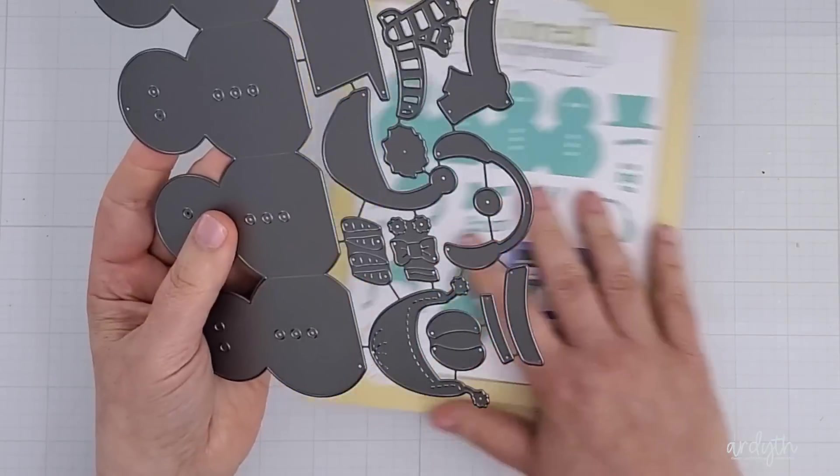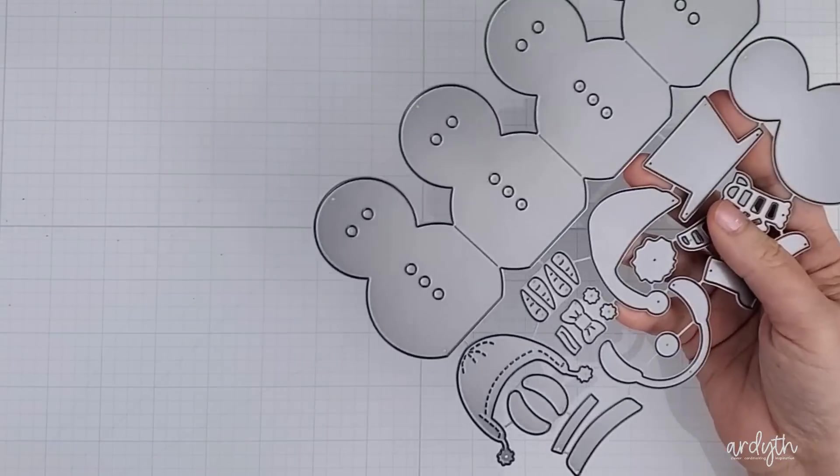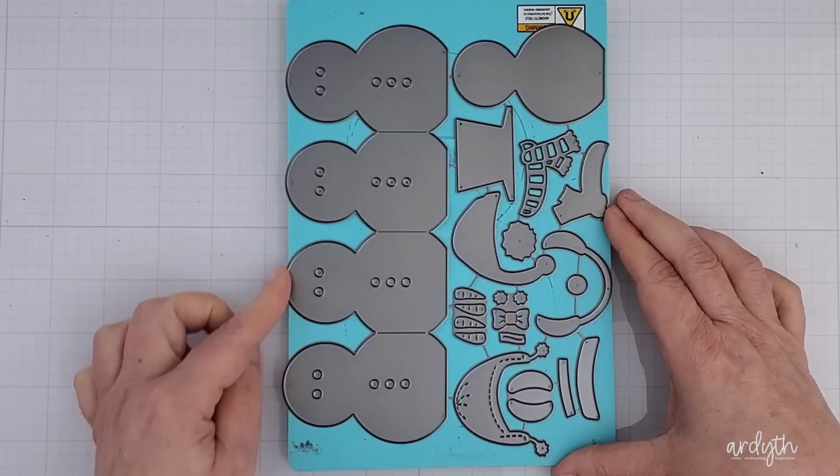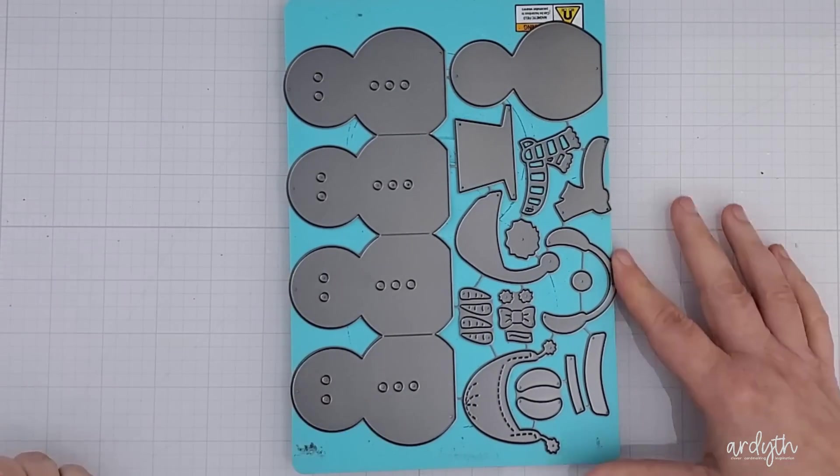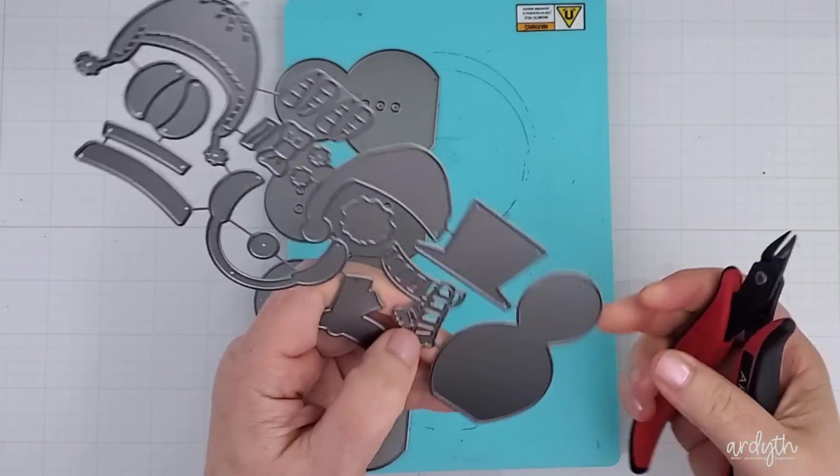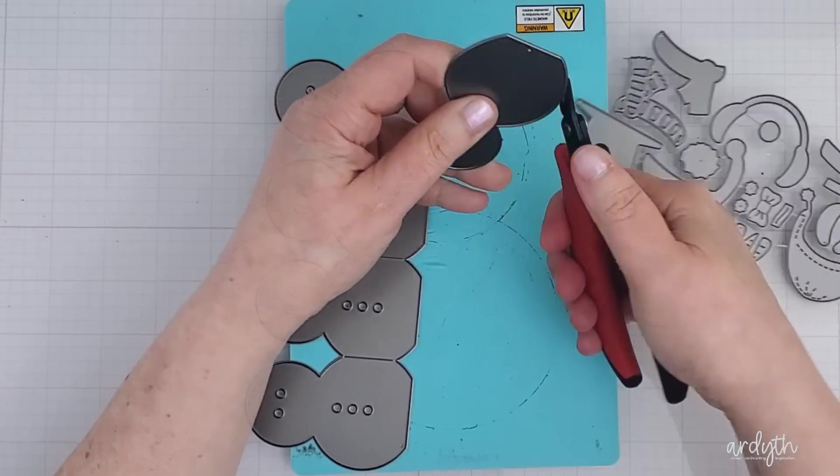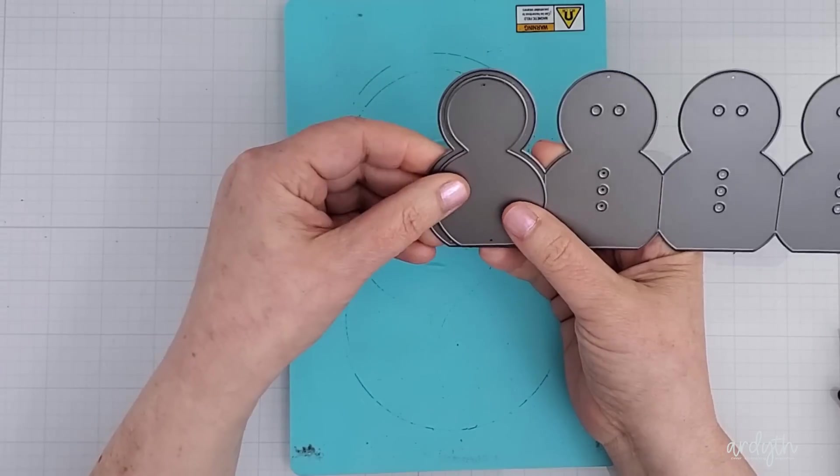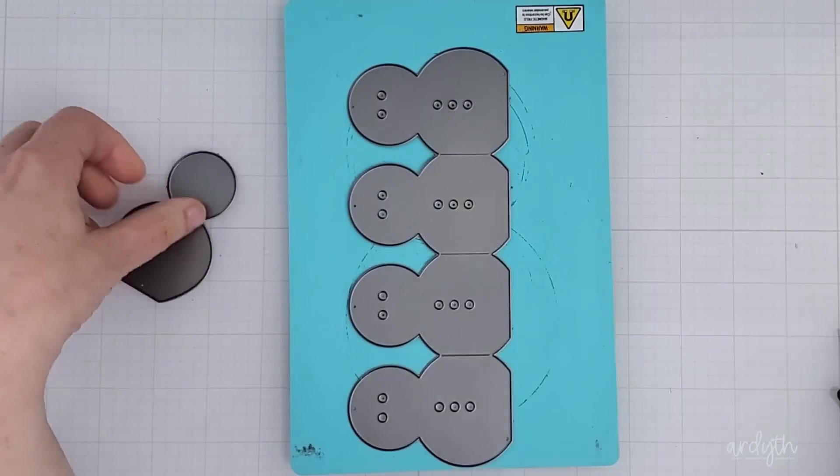The dies came all together and I was hoping I could leave them like that so I wouldn't lose any of them but they don't all fit on my Gemini sandwich. They would fit on a larger die cutting machine though. I cut the snowman away from all the accessories and I cut away this other little backer snowman because I'll likely cut it from black cardstock most of the time although I do have some other ideas for him as well.